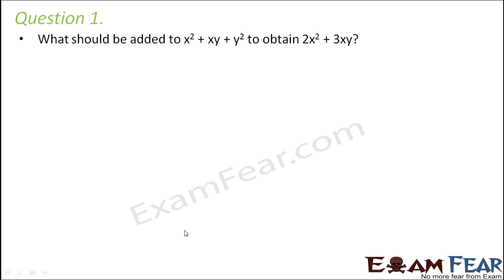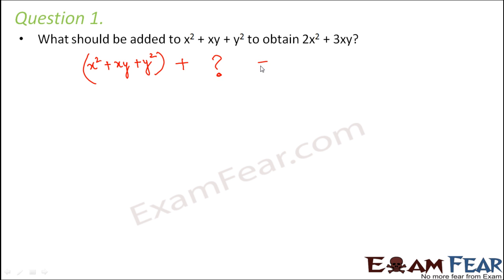Question number 1: What should be added to x squared plus xy plus y squared to obtain 2x squared plus 3xy? In this question, we have to find out — let's say this is one expression which is given — what expression should be added to it such that the result is 2x squared plus 3xy. So we basically need to find out this question mark, that is this expression.